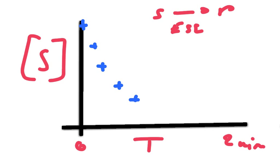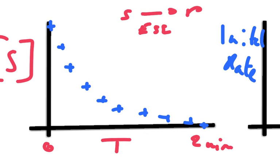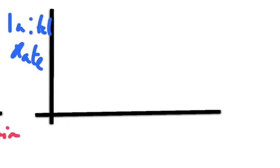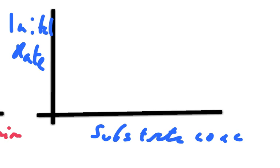So the substrate concentration falls instantly until it is used up, at which point the rate of reaction will be zero. When measuring rate of reaction against substrate concentration, it is important to plot the initial rate of reaction, because as soon as you start the experiment, the substrate concentration begins to fall.